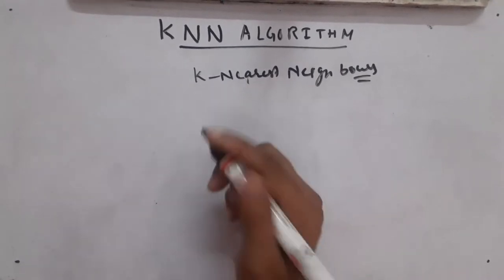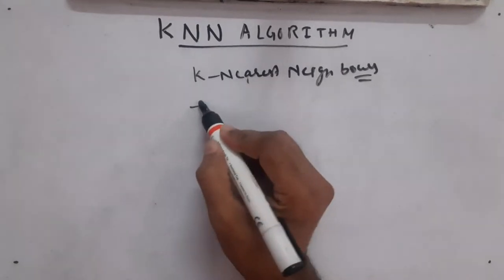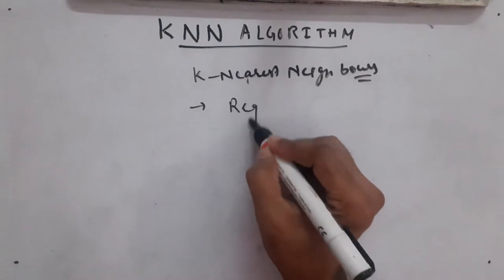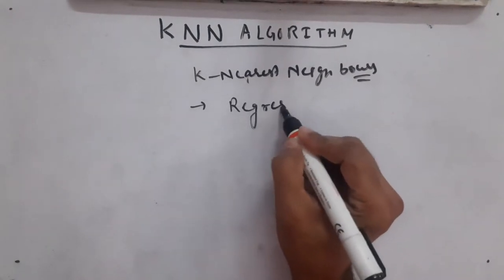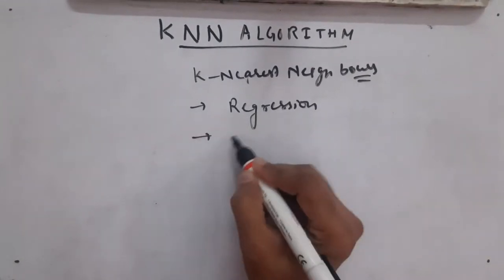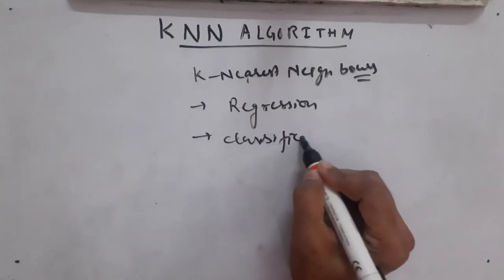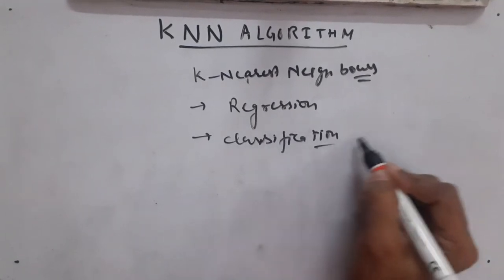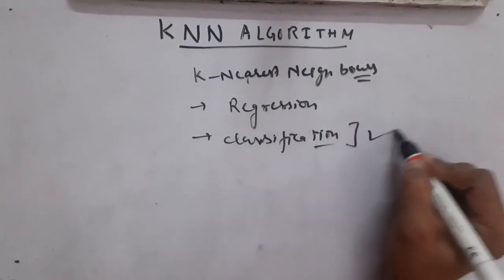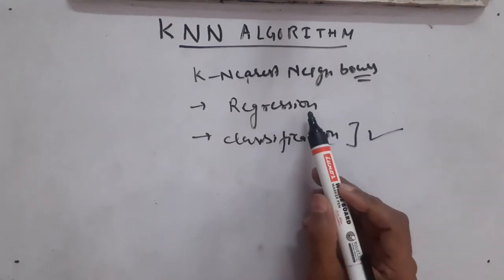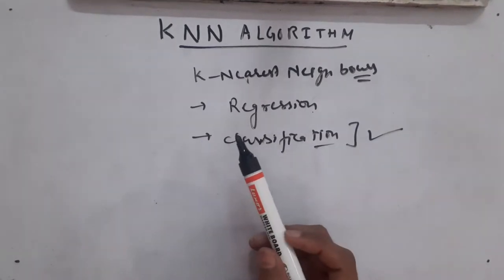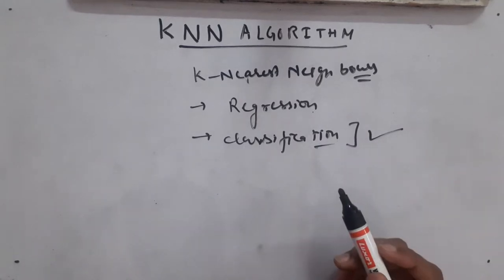KNN stands for K-Nearest Neighbors, and this algorithm can be used for regression problems as well as classification problems. But majorly it is used for classification problems, although we can use it for regression as well.